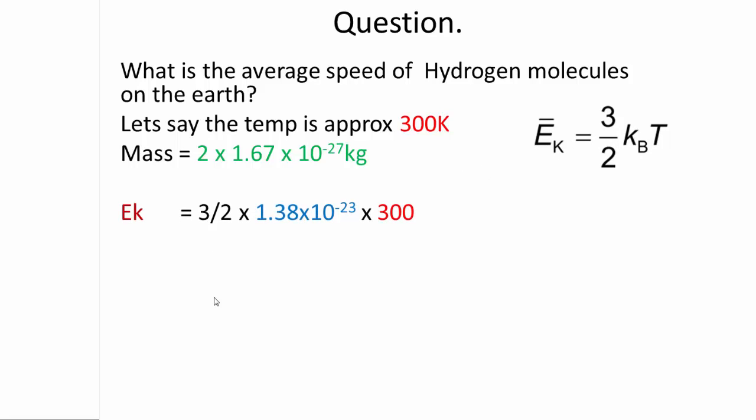And we use this equation. So let's substitute those values in. 3 over 2 times the Boltzmann constant times by 300. And we end up with 6.21 times 10 to the negative 21 joules.